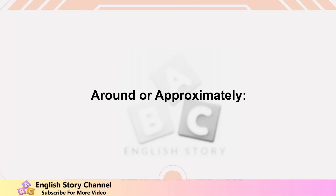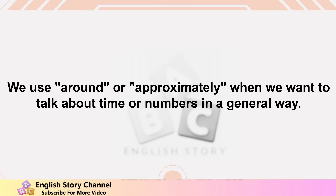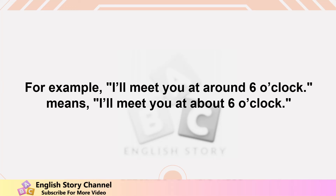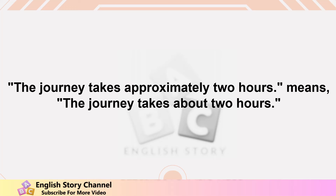Around or Approximately. We use 'around' or 'approximately' when we want to talk about time or numbers in a general way. For example, 'I'll meet you at around 6 o'clock' means 'I'll meet you at about 6 o'clock.' 'The journey takes approximately 2 hours' means 'the journey takes about 2 hours.'